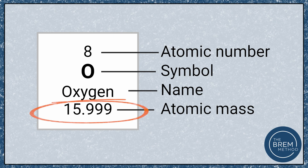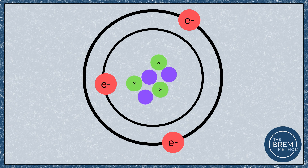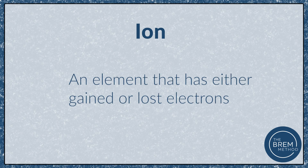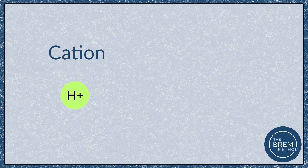We can also change the number of electrons an atom has. Since electrons carry a negative charge, gaining or losing electrons means gaining or losing charge on the atom. If we lose electrons, we're losing negative charge and we'll become positively charged. An ionic element is one that has either gained or lost electrons and now has a charge. Anything that loses electrons ends up positively charged — a cation — and anything that gains electrons gains a negative charge and becomes an anion.